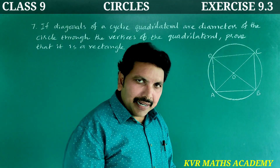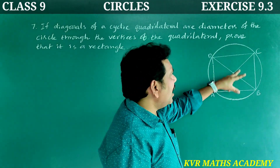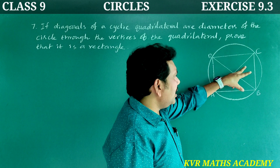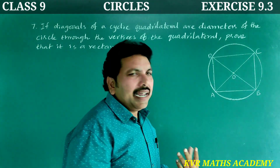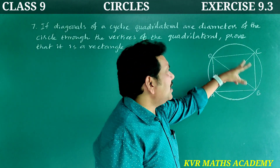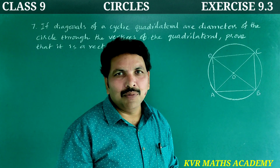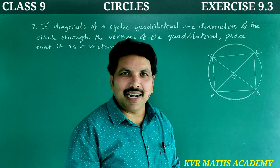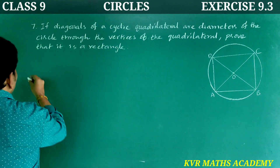A rectangle is a quadrilateral in which all the angles are 90 degrees and the opposite sides are equal. We will prove angle A = angle B = angle C = angle D = 90 degrees, and AB = CD and BC = AD, then ABCD is a rectangle. Let us prove.